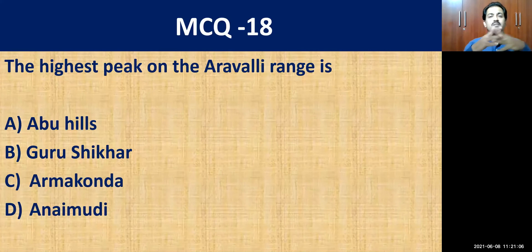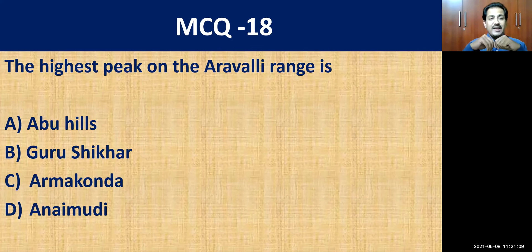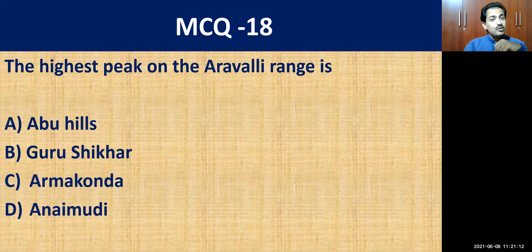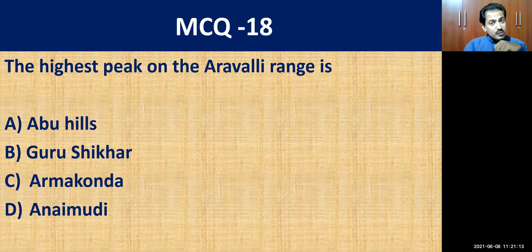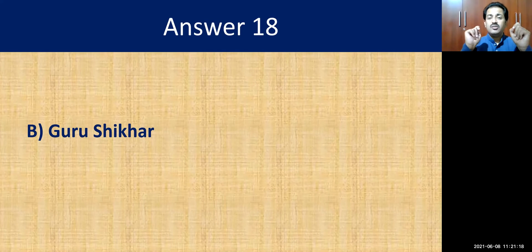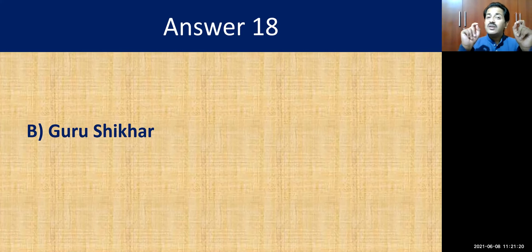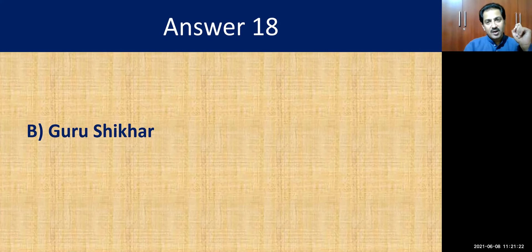MCQ question number eighteen: the highest peak on the Aravalli range is Mount Gurushika. Keep this in mind — the highest peak is Gurushika, and Mount Abu is the hill station in the Aravallis.